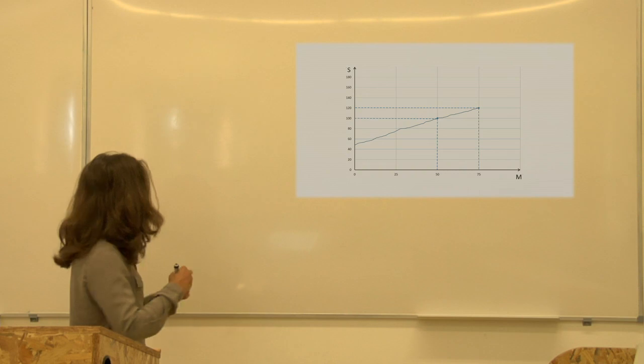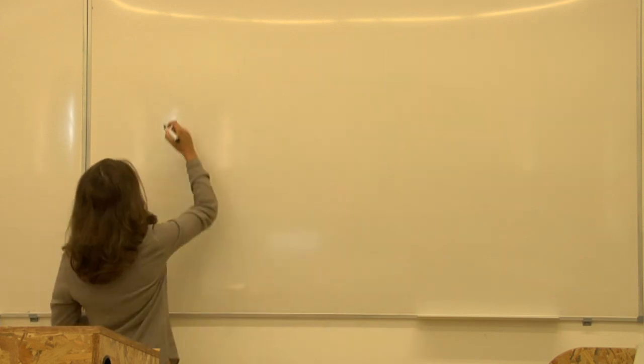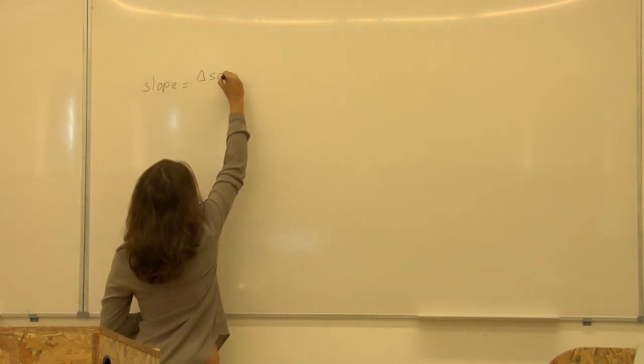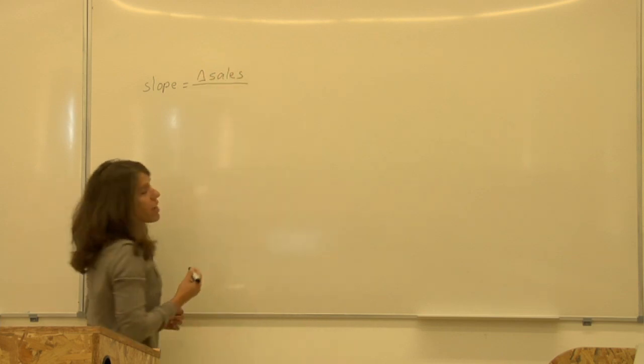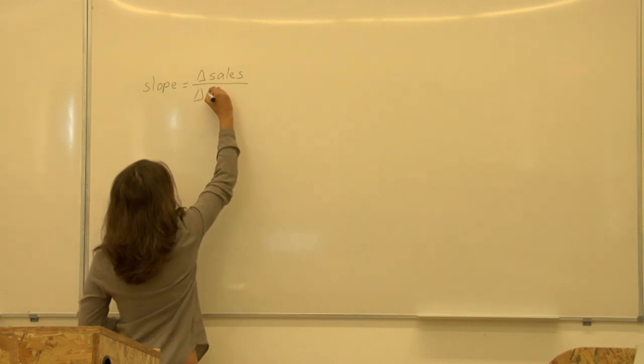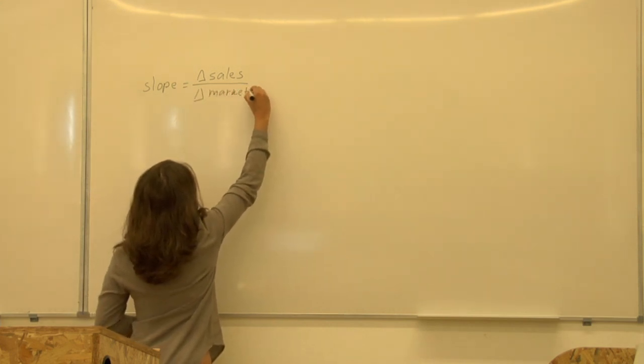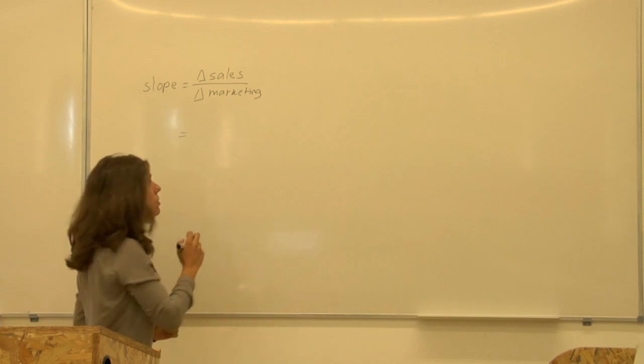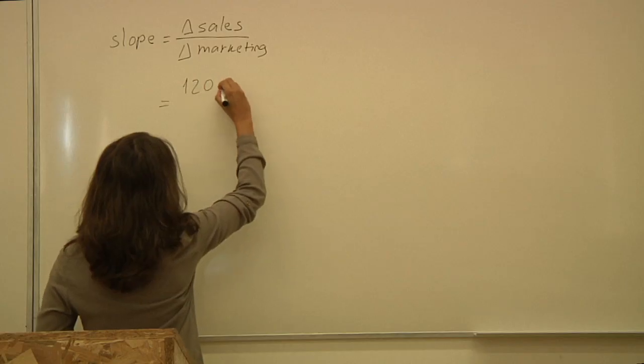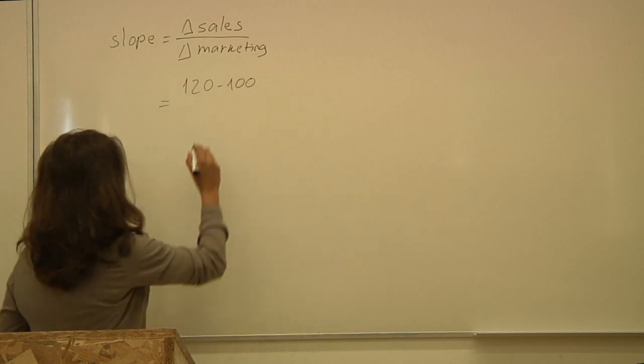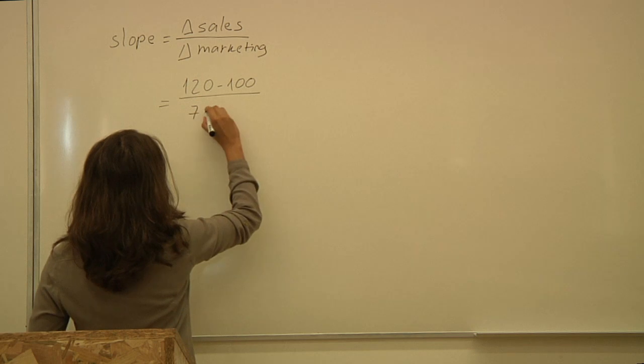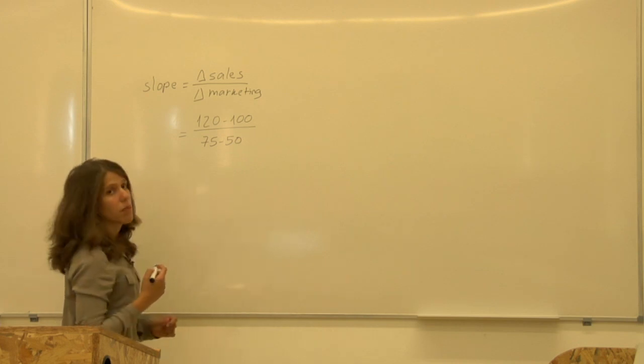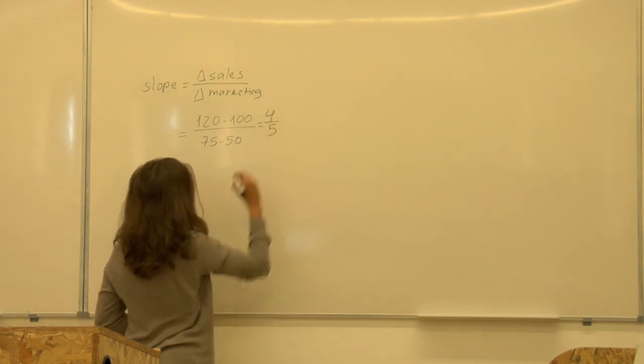For the slope, we know that it's the ratio between the change in sales over the additional amount that you spend in marketing. Like in the last example, we have a difference of 120 to 100 in sales and the difference in marketing was 75 minus 50 euros that we have spent in marketing. This is equal to 4 over 5. So, this is the slope of our curve.